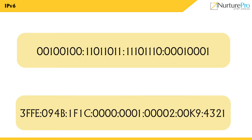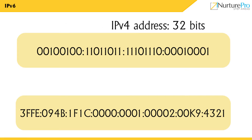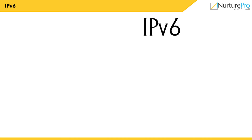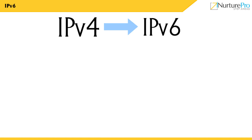IPv6 provides a larger address length than IPv4. IPv4 has an address length of 32 bits, while IPv6 has an address length of up to 128 bits. By removing this shortage of network addresses, IPv6 overcomes the drawback of IPv4. IPv6 is considered the next generation of IPv4 and provides newly added features to overcome IPv4 flaws.